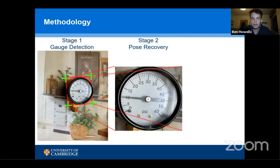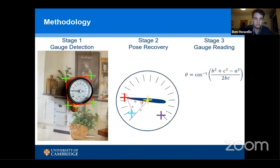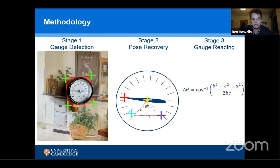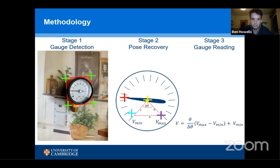We can then detect four further key points corresponding to the scale minimum, the scale maximum, the pointer center, and the pointer tip, and use basic geometry to find the position of the pointer tip and the scale maximum. We then use a linear interpolation to find the true gauge reading, provided we know the scale minimum and maximum values through OCR detection or manual entering.